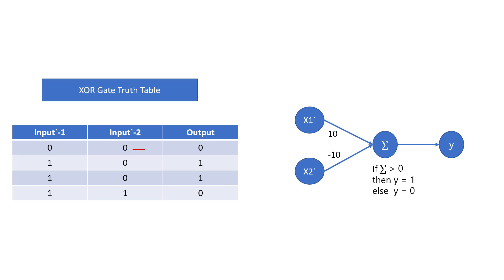For input (0,0) the summation value is 0. For input (1,0) it is 10. For (1,0) — notice this point — and for input (1,1) it is again 0, because 1 times 10 is 10 and 1 times minus 10 is minus 10, so 10 minus 10 equals 0. Now we need a perceptron where if the summation value is greater than 0 then output is 1, and if summation is less than or equal to 0 then output is 0.